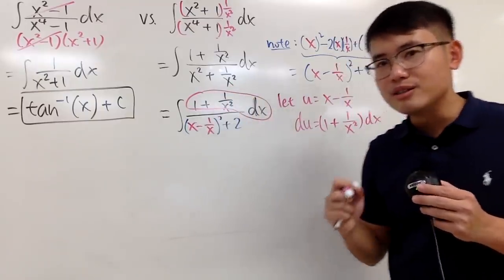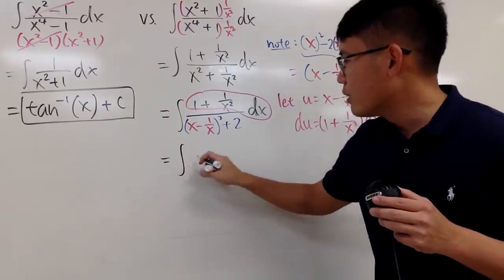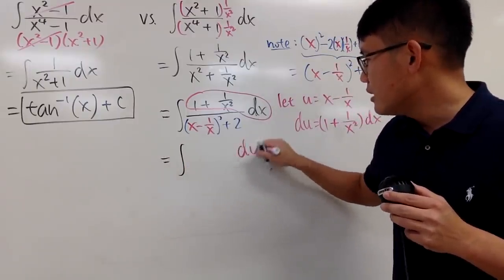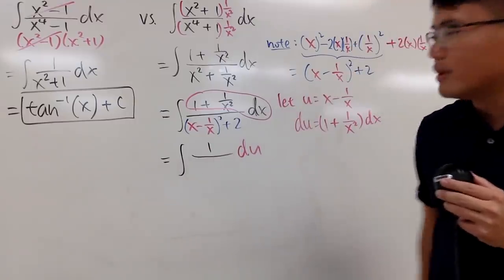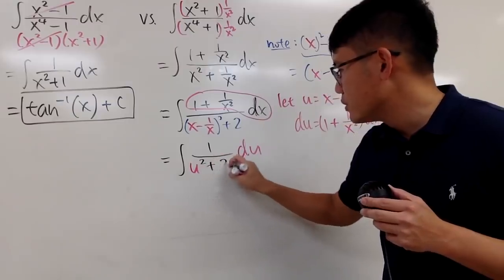Therefore, this is now the integral—let me put du on the side, I like that—for the denominator, we have u² + 2.